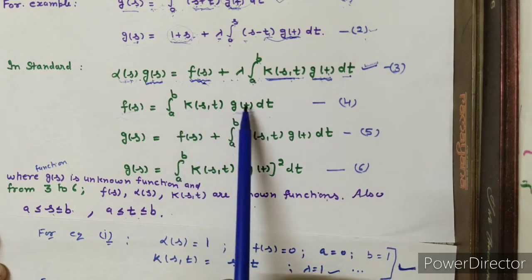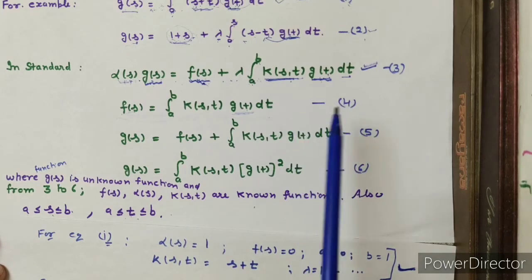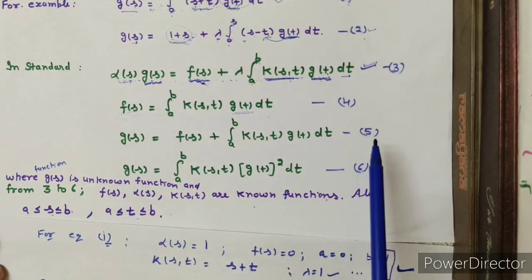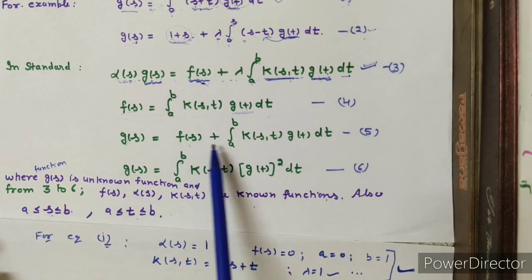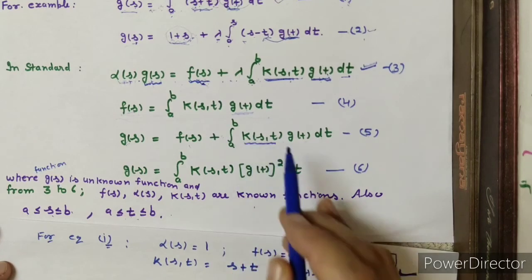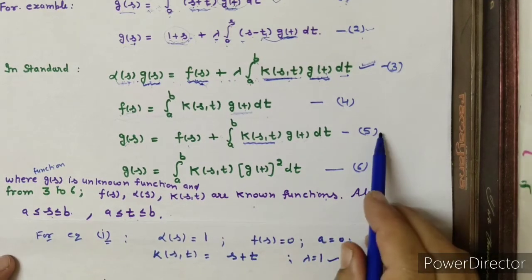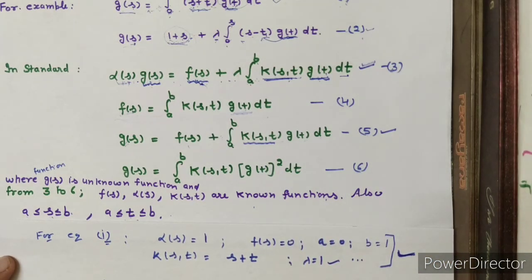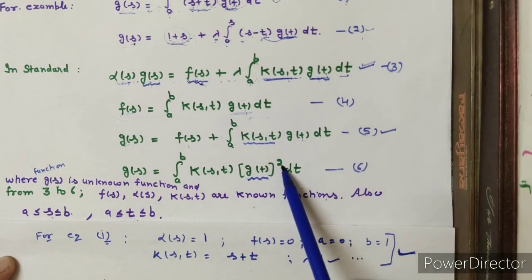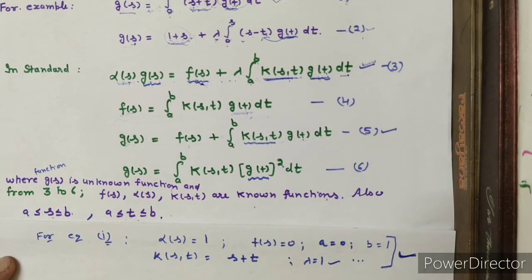We will do this classification when we cover the classification lecture. For equation 5, alpha(s) = 1 and f(s) is given. Here k(s,t) is known as the kernel. In equation 5 unknown function g(t) appears to power 1 — this is linear. If the unknown function appears to power 2, that is nonlinear. This is the definition of your integral equation, which types are linear and nonlinear.